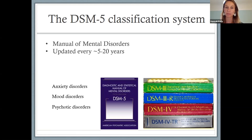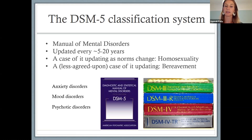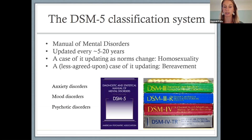To go back to the idea that what we label as normal versus abnormal is constantly changing, the DSM updates as norms change as well. For example, homosexuality was actually included in the DSM until the seventies and was taken out as people's understanding and cultural norms changed. Another case of updating: it used to be that if you had all the symptoms of depression but in the context of a loved one recently dying, that couldn't be classified as depression because of a bereavement clause. That clause was taken out, so now someone who has lost a loved one can meet criteria for depression.